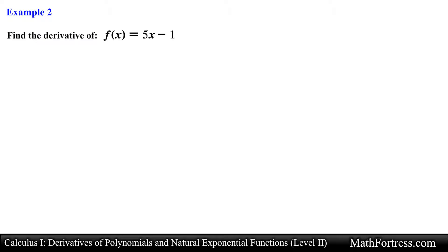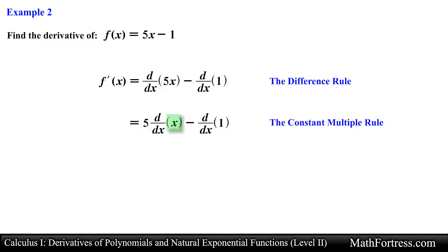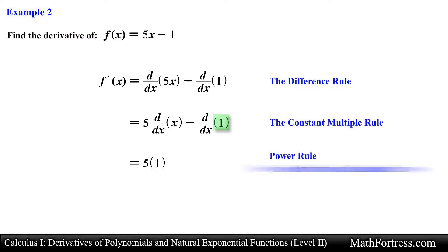Find the derivative of f = 5x − 1. Here we have a difference of two functions, so we apply the Difference Rule and take the derivative of each function individually. The first function contains the constant 5 and a power function of degree 1, so its derivative equals 5 after applying the Constant Multiple Rule and Power Rule. The second function is a constant, and the derivative of a constant is 0, so the final derivative is 5.